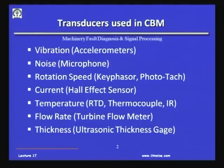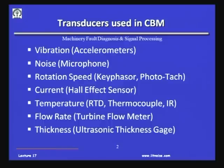To briefly discuss in a nutshell: the transducers used in CBM for vibration - usually the accelerometers are used. The mechanical parameter vibration is measured by accelerometers. The noise or sound which we hear or which machineries radiate is measured usually by a microphone. Both accelerometers and microphones could also be used to measure noise underwater - for example, propeller noise inside the sea - and in that case, those are known as hydrophones.